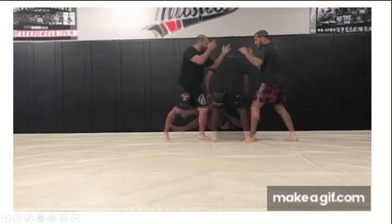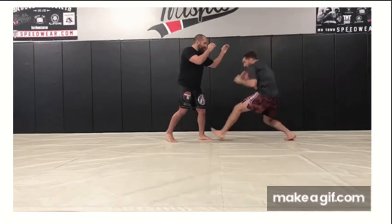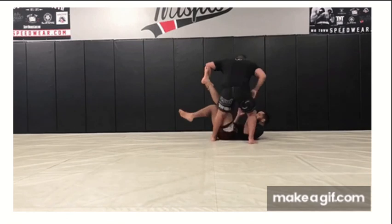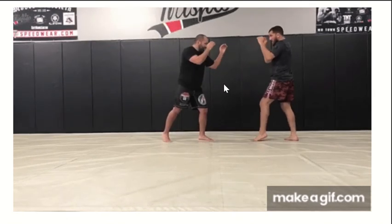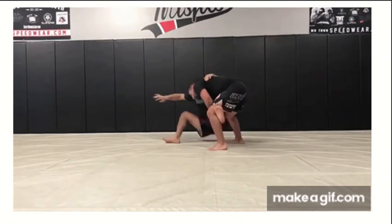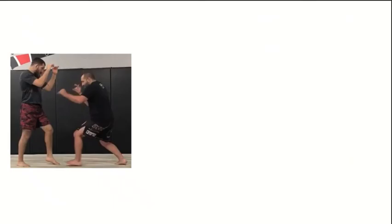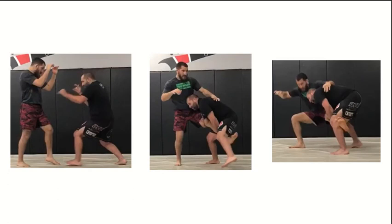Alright, so now similar to a sumo match, what we have here is an MMA match where you see one opponent taking down the other. So how does he actually take him down? Let's break it down. As he takes it down, firstly he gets into position, after that he lifts up one leg and puts him down.